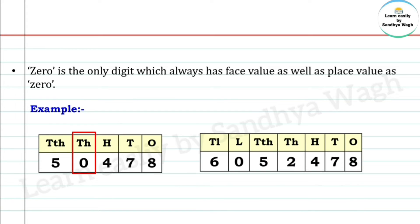Another example: in the number 60,52,478, 0 is still the only digit which always has face value as well as place value as 0.